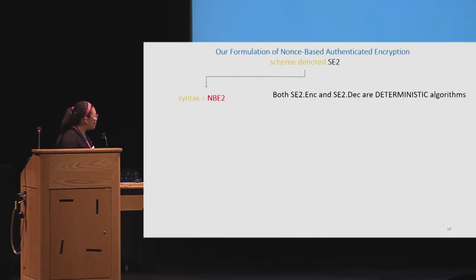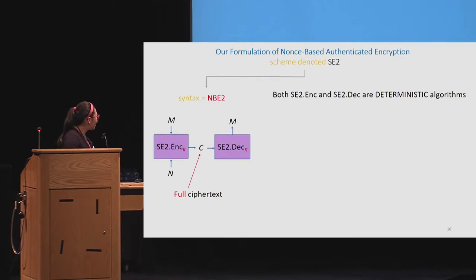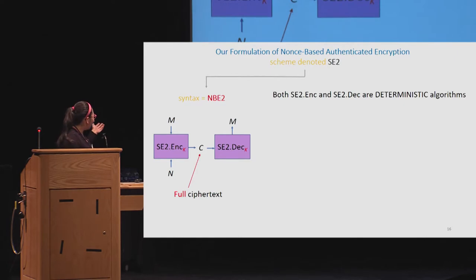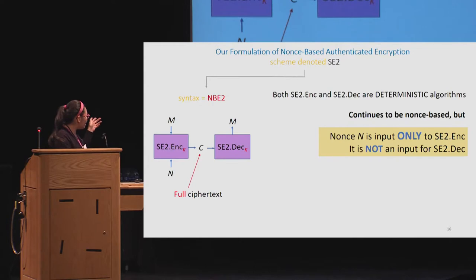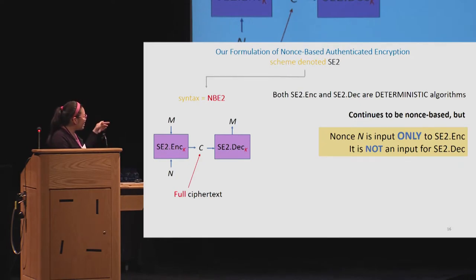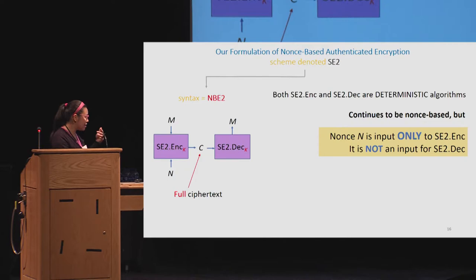Returning to our two parts of a security definition, let's start with the NBE2 syntax. Spot the difference — it's not a big one. The difference is that decryption doesn't receive the nonce anymore. It's only an input to encryption, and we now call C the full ciphertext as opposed to the core ciphertext. In particular, if decryption needs the nonce to perform decryption, you need to somehow send it inside of C — giving us a better way to inspect how nonce communication is occurring.